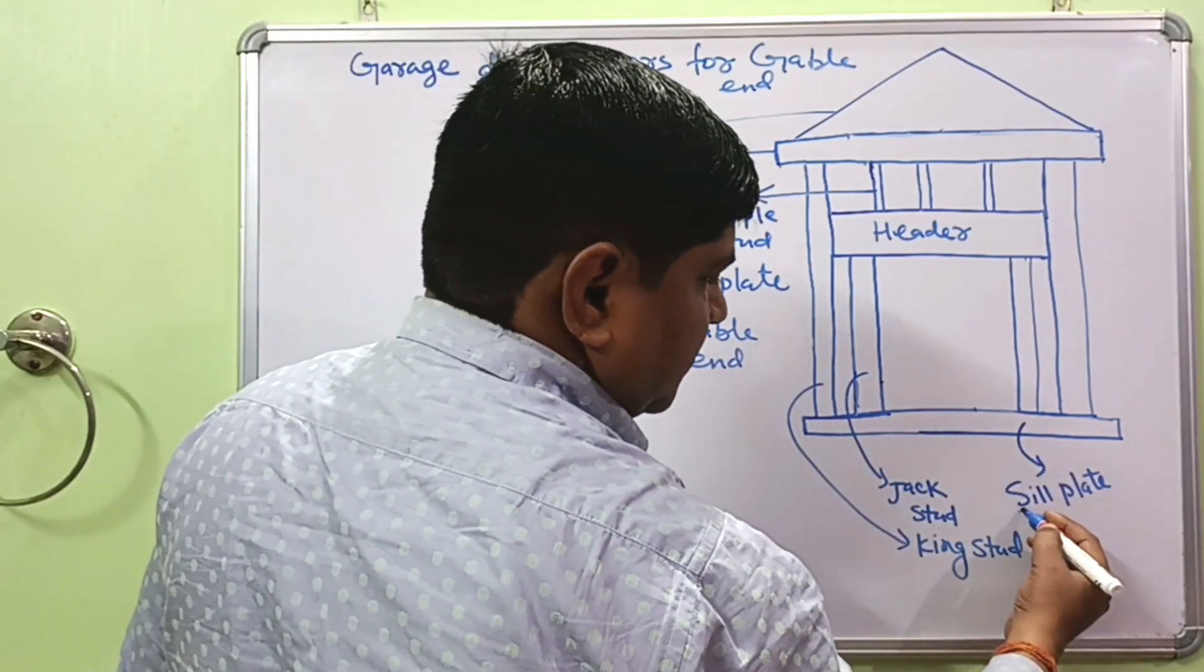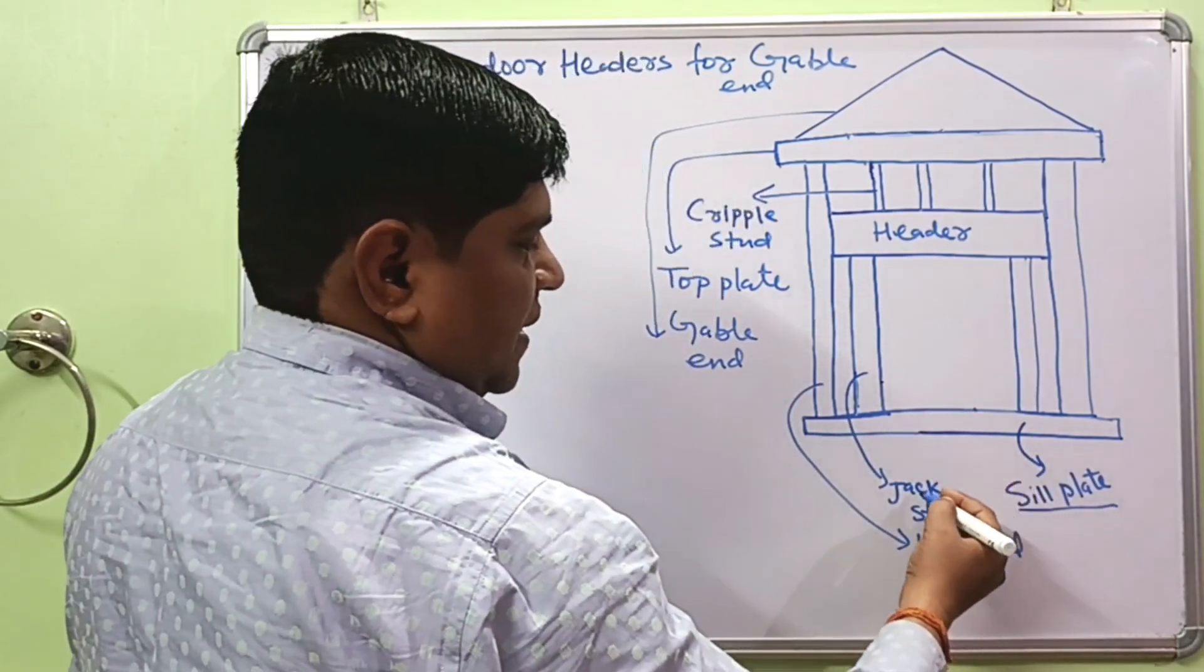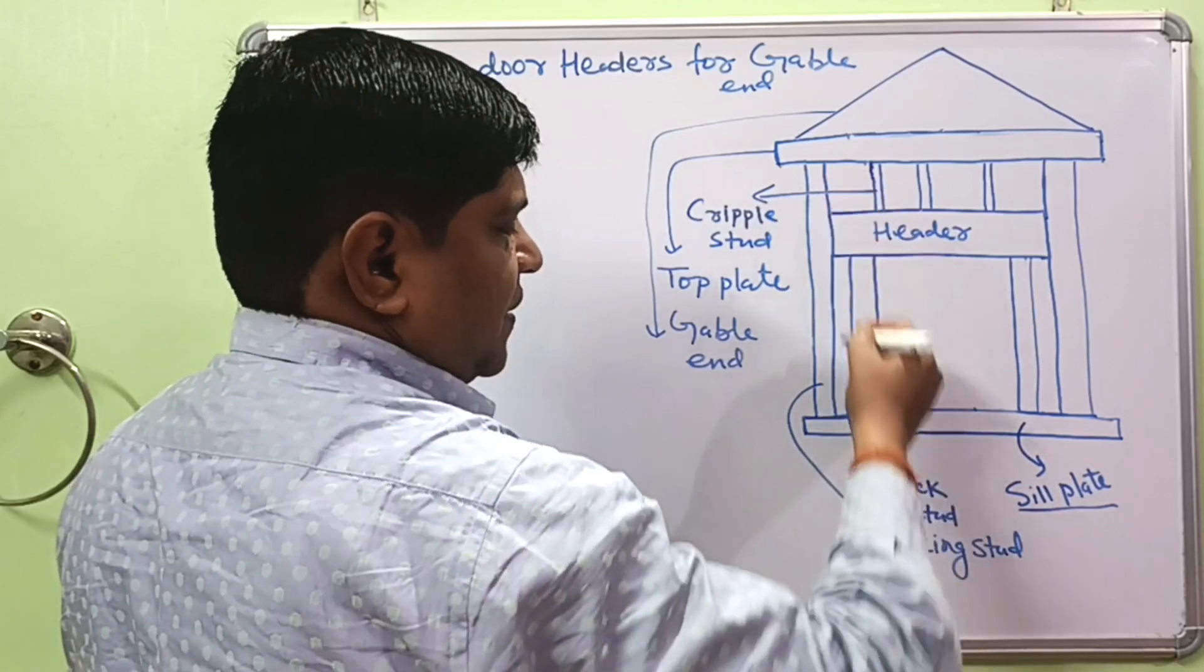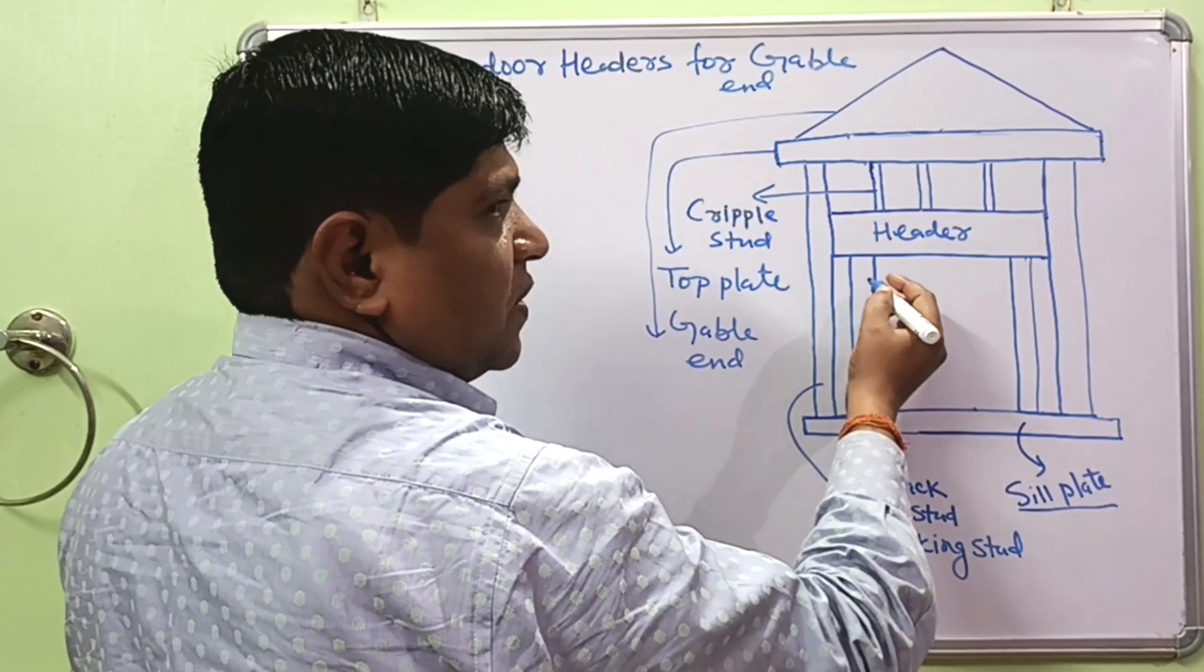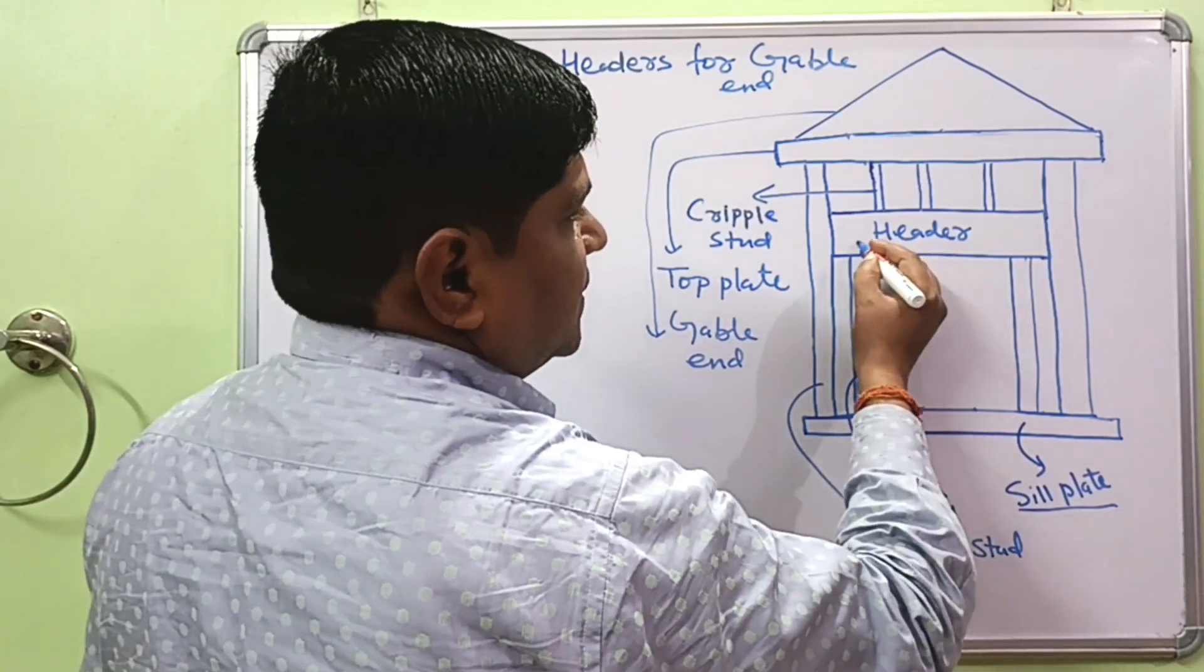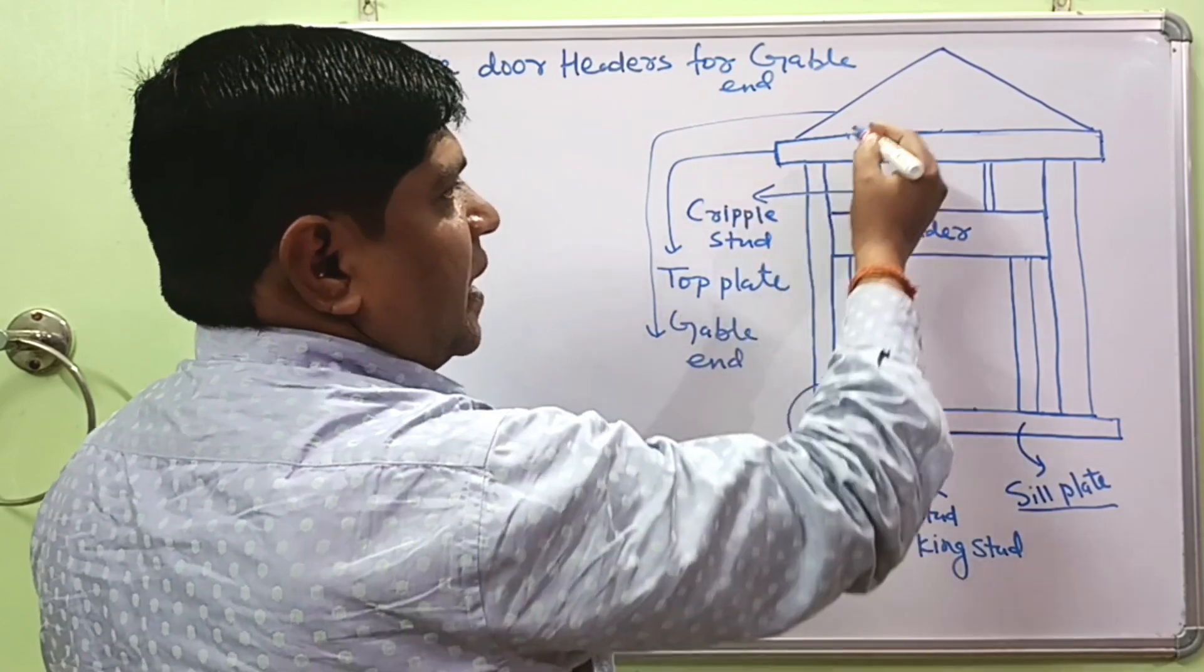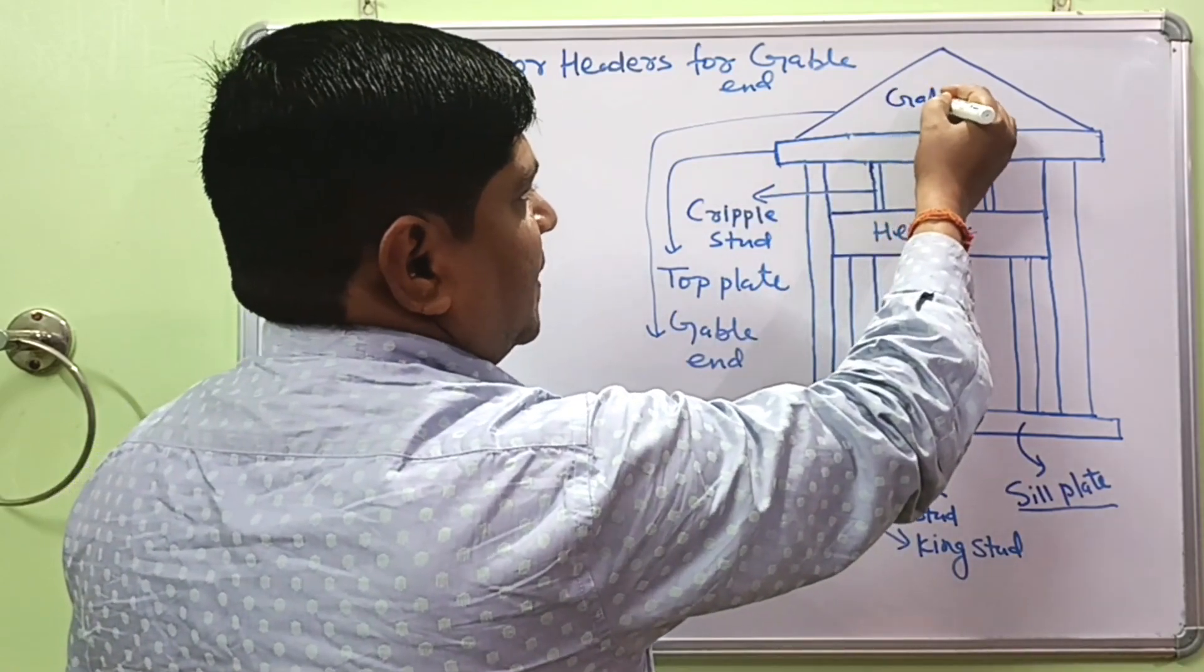First, this one is bottom plate known as sill plate. This one is cripple stud and one is vertical long king stud to support the load of header. This is the header. And this is cripple stud and this is top plate. And this one is gable-end.